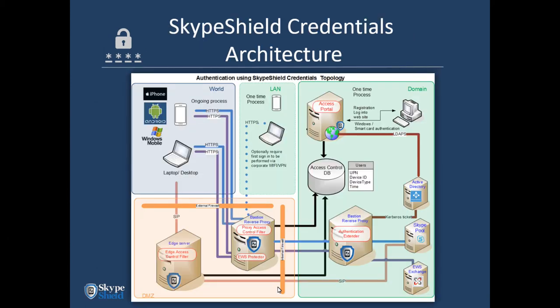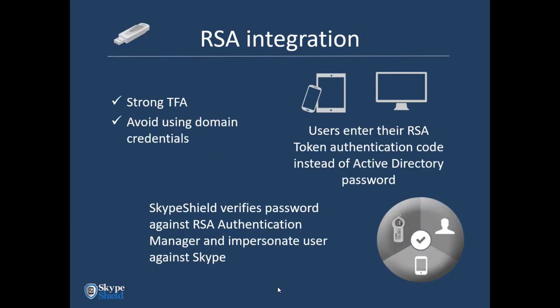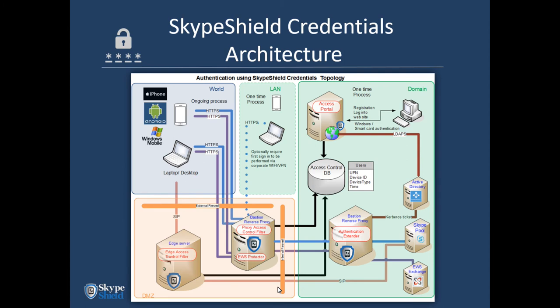The topology for credential protection requires an additional machine inside the domain hosting our authentication tender filter. This filter has Kerberos constrained delegation capabilities. It receives signed and encrypted requests from the Bastion in the DMZ. After validating the request, it initiates a Kerberos ticket from Active Directory to give access to both Skype and Exchange. We also leverage this same infrastructure for RSA: instead of checking credentials against our database, we check against the RSA manager. Importantly, we never store the domain password — you can change your domain password and it is completely transparent to us. The only thing we store is the hash of the Skype for Business password.